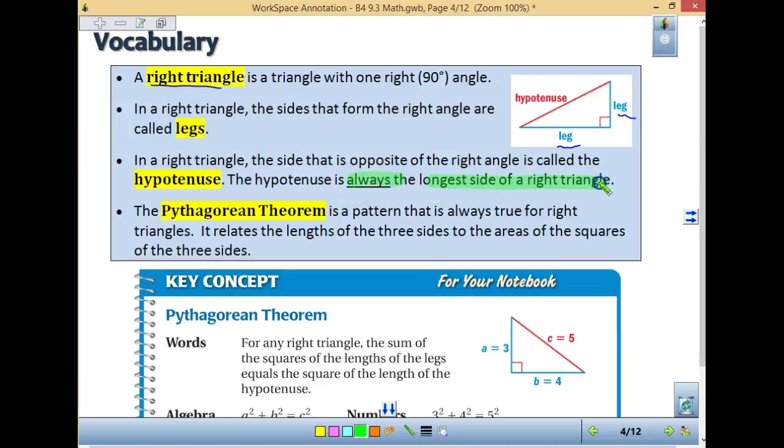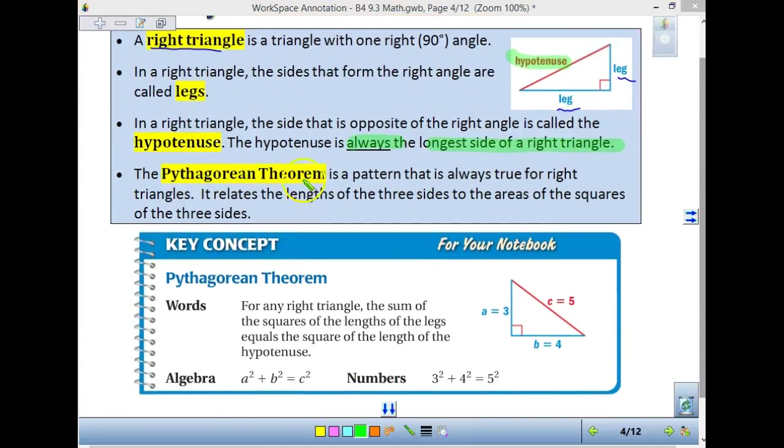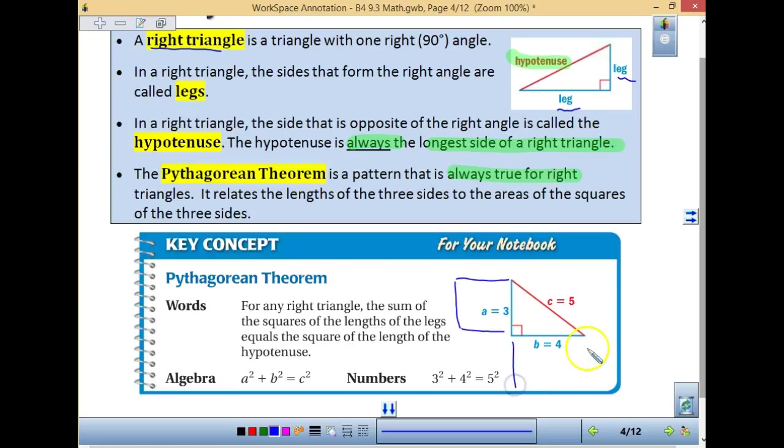So whenever I look at my hypotenuse, that is going to be my longest side. Pythagorean theorem is a pattern that is only true for right triangles. It is not true for any other type of triangle. And it relates the lengths of the three sides to the areas of the squares. So that's why in the first lesson, we were always drawing those squares coming off and saying that our area of each square.